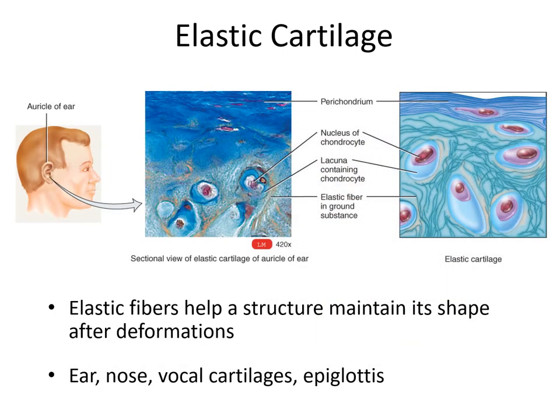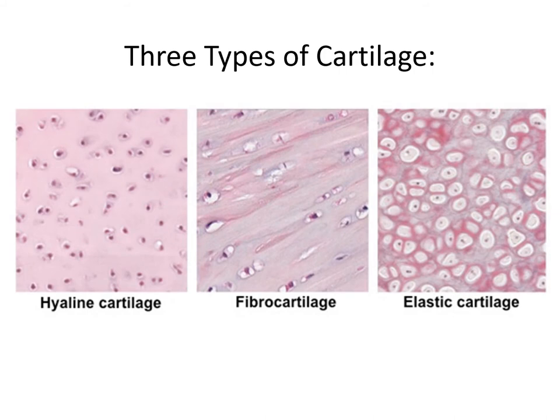Elastic cartilage is fairly distinctive under the microscope — it stains more darkly than hyaline cartilage, and the fibers are fairly obvious. Like the other types of cartilage, it has chondrocytes that exist within lacunae. Seeing the three types side by side under the light microscope: hyaline cartilage doesn't have any visible fibers; fibrocartilage does, with quite large collagen fibers; and elastic cartilage has finer elastic fibers that stain fairly darkly.